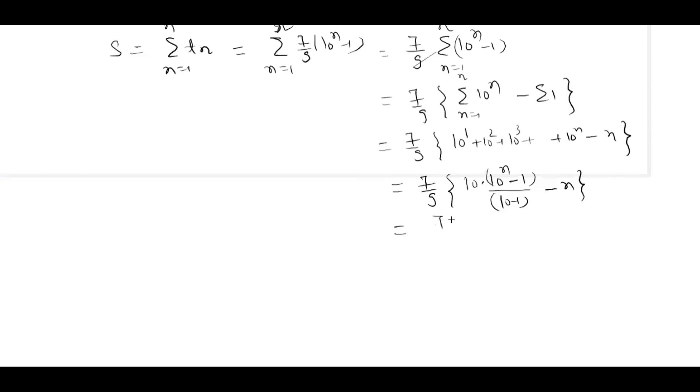This is nothing but 7 by 9 into 10 by 9 times 10 to the power n minus 1, which simplifies to 70 upon 81 into 10 to the power n minus 1 minus 7n by 9. Either I can keep it here, and this is what will be my answer.